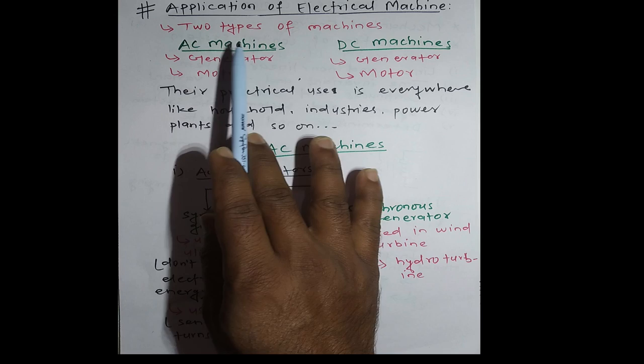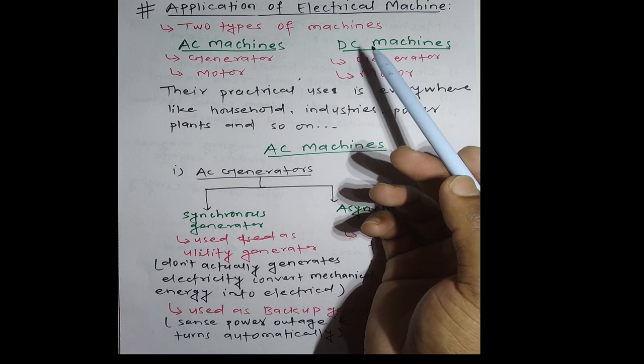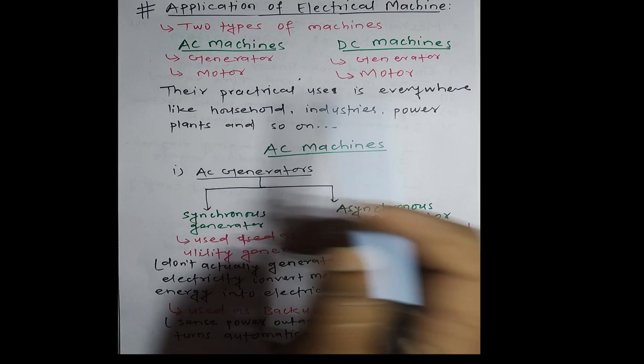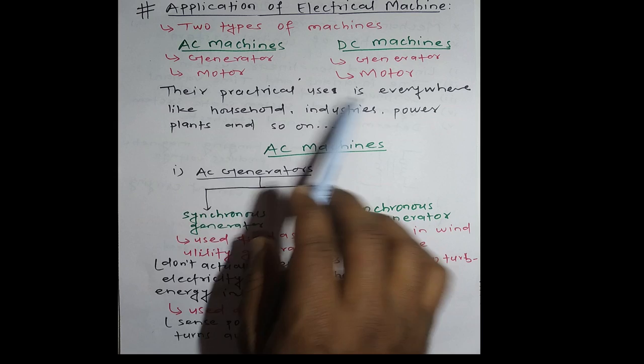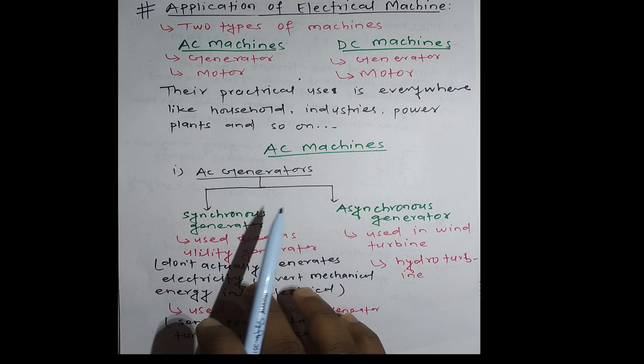In the previous video, we studied types like AC machines and DC machines. AC machines are further divided into two types: AC generators and AC motors. Similarly, DC machines include DC generators and DC motors. Their practical use is everywhere—in households, industry, power plants, and so on. We can see wide applications of electrical machines. Let's see their applications in detail.